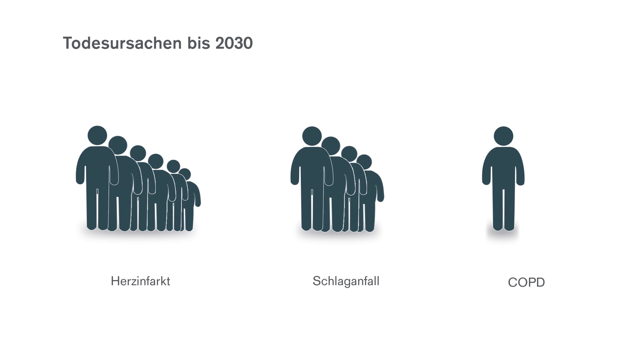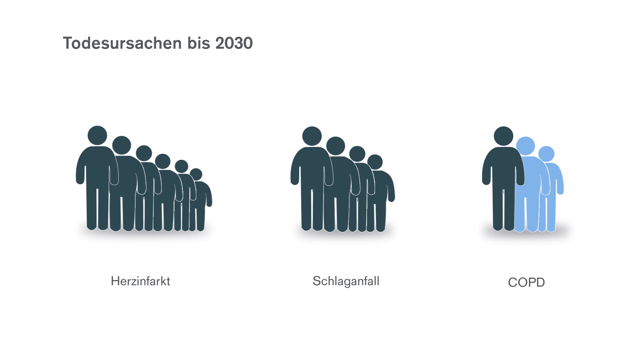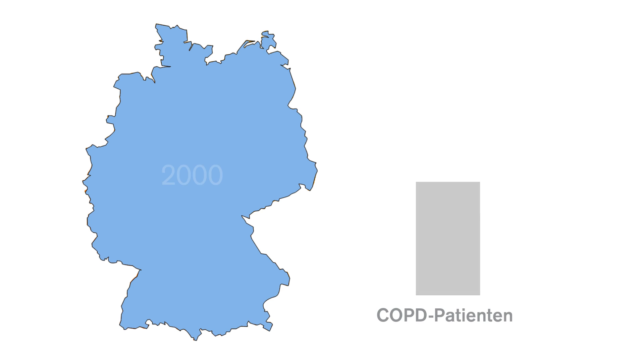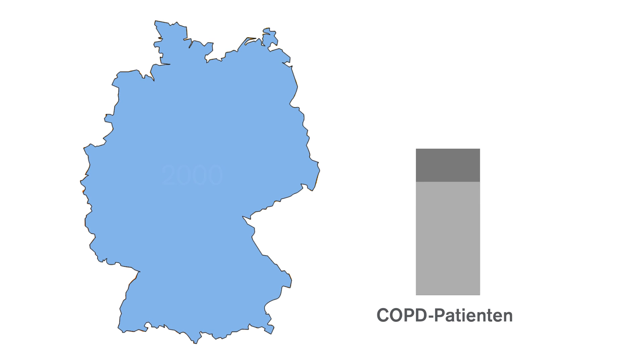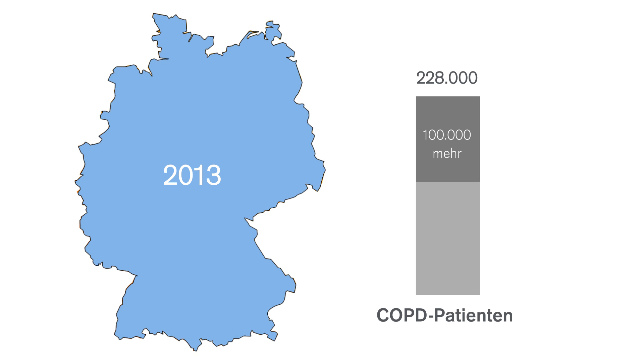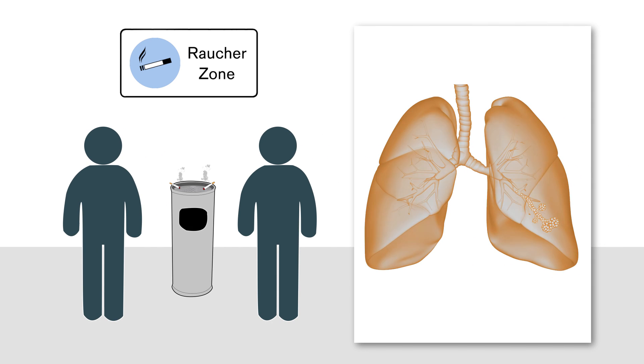Chronische Erkrankungen wie COPD sind weltweit verbreitet. Bis 2030 könnte COPD auf Platz 3 der häufigsten krankheitsbedingten Todesursachen nach Herzinfarkt und Schlaganfall vorrücken. Auch in Deutschland ist dieser Negativ-Trend erkennbar: 2013 wurden 228.000 COPD-Patienten stationär behandelt — über 100.000 mehr als im Jahr 2000. Hauptursache ist das Rauchen, das über 90% der Patienten betrifft. Nehmen Sie einen Strohhalm und versuchen Sie dadurch zu atmen — ganz schön anstrengend. So schwer ist es für einen COPD-Patienten.